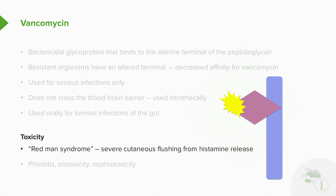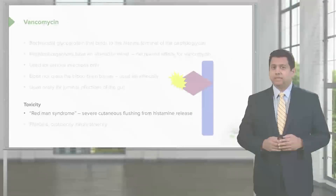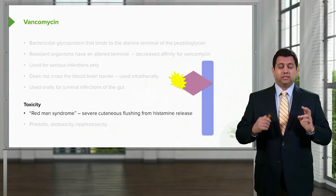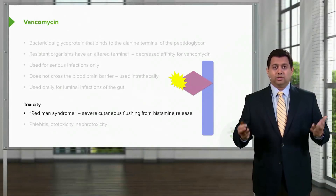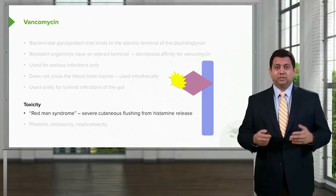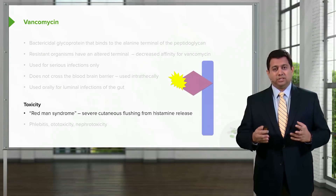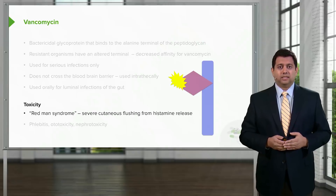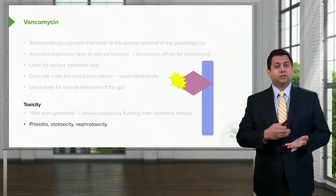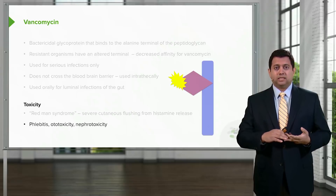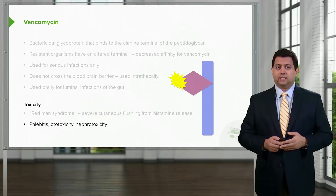The important toxicity to remember with vancomycin — and one you'll be tested on — is red man syndrome. This causes severe cutaneous flushing from histamine release. It's quite a dramatic reaction; at first you might think it's a horrible allergy, but it's actually a histamine release rather than a true allergy. Vancomycin can also cause phlebitis, ototoxicity, and nephrotoxicity, making it a potentially toxic agent.